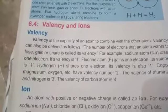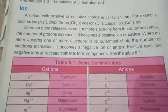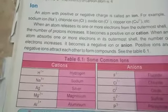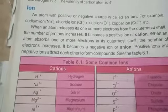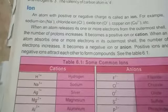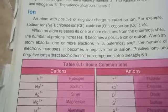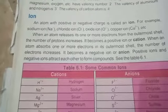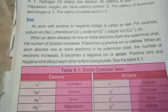An atom has no charge because it has an equal number of protons and electrons. Protons are positively charged and electrons are negatively charged. Being oppositely charged, these subatomic particles cancel the effect of each other, and in this way the atom has no charge. But an atom will gain charge when it loses or gains an electron.